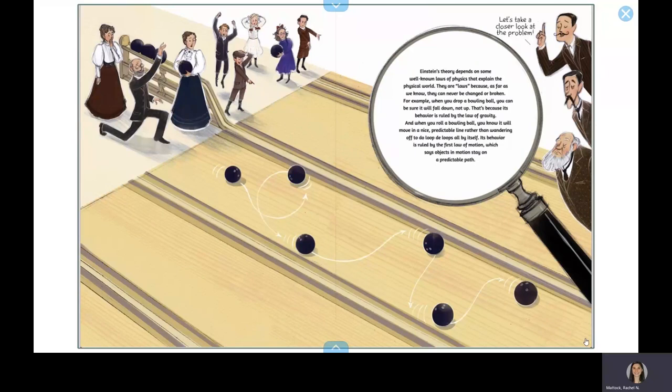Einstein's theory depends on some well-known laws of physics that explain the physical world. They are laws because, as far as we know, they can never be changed or broken. For example, when you drop a bowling ball, you can be sure it will fall down, not up. That's because its behavior is ruled by the law of gravity.